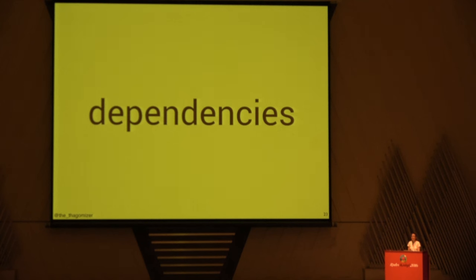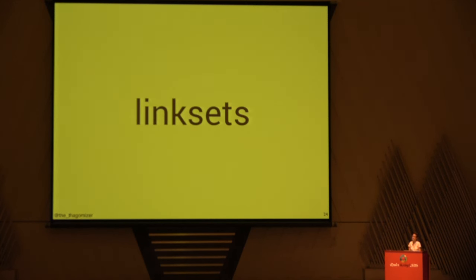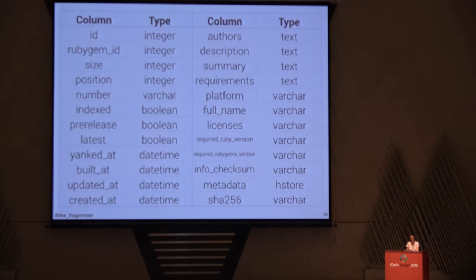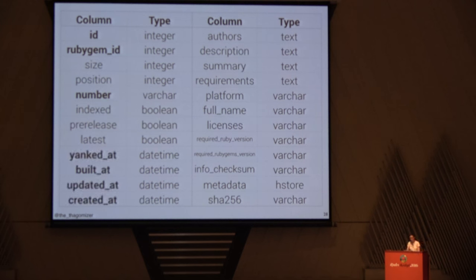There's a dependencies table, which wasn't particularly interesting for my analysis. Neither was linksets, although that's the information that includes the documentation link, the GitHub link, and the bug tracker link that appears on a gem's homepage on RubyGems. The versions table, though, is very useful — and also very big. I'll point out a few fields I found particularly useful: ID, Rubygem, and number — which is the version string. The dates help me figure out trends and what's happening currently versus five years ago. And there are interesting fields for platform, licenses, required Ruby version, and required RubyGems version.